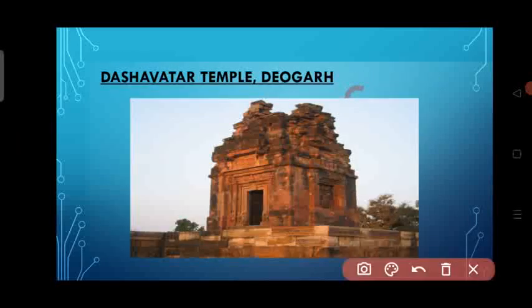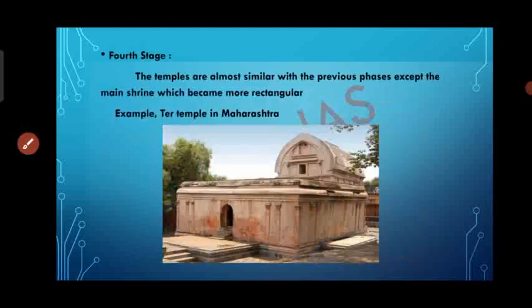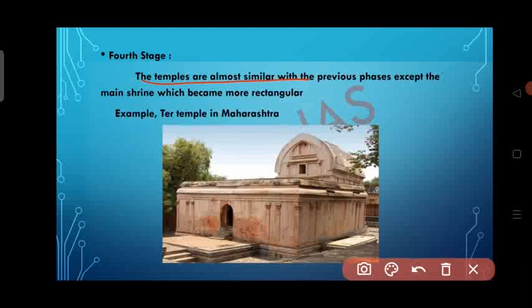The Dashavatara Temple at Deogarh is built on an uprised platform, and the main temple is square-shaped with a curvilinear Shikara. In the fourth stage, temples were almost similar to previous phases, except the main shrine became more rectangular. Example: Teli Temple in Maharashtra.